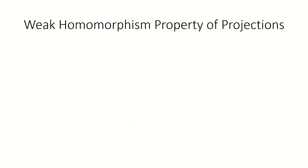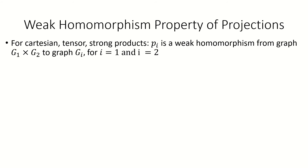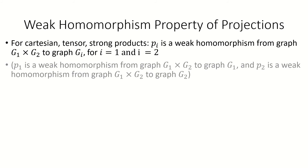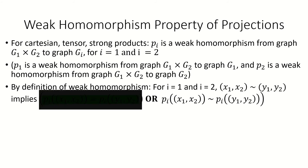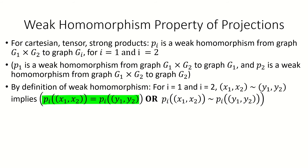One interesting property of projections is that for the Cartesian, tensor, and strong products, the projection function p sub i is a weak homomorphism from the product graph to the i-th factor graph. In other words, under p sub i, a pair of adjacent vertices in the product graph will be mapped to either the same vertex in g sub i, or to a pair of adjacent vertices in g sub i. This is not the case for all graph products; the reason it's true for these products is their particular adjacency rules.